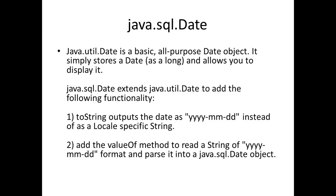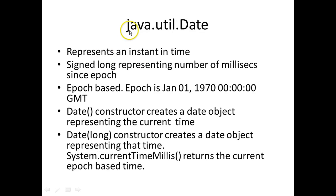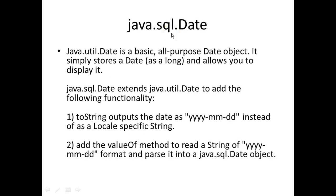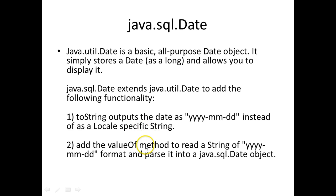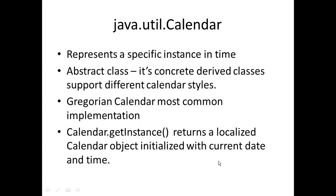In Java you also have the Date class in the java.sql package. The basic Date is part of the java.util package, but java.sql.Date extends java.util.Date to add more functionality. Its toString method outputs a date as a four-digit year, two-digit month, and two-digit day instead of a locale-specific string. There is also a valueOf method that can read and parse a string into a java.sql.Date object.